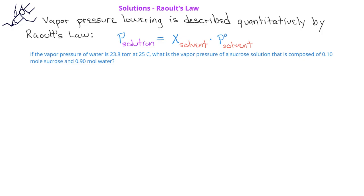In order to answer this question, we can apply Raoult's law. The first statement of the problem gives us the vapor pressure of the pure solvent, water, which is 23.8 torr. In order to find the vapor pressure of the solution, we need to determine the mole fraction of the solvent.